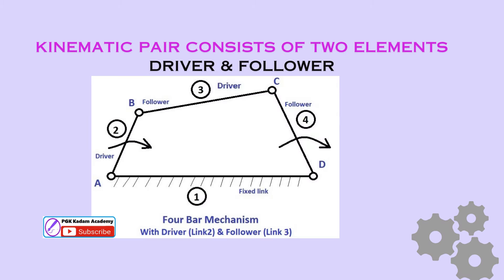A Kinematic Pair consists of two elements, typically called the driver and the follower, that are connected in a way that allows motion or constrains specific types of relative motion. The driver is the component that imparts motion, while the follower is the element that responds to the motion of the driver.